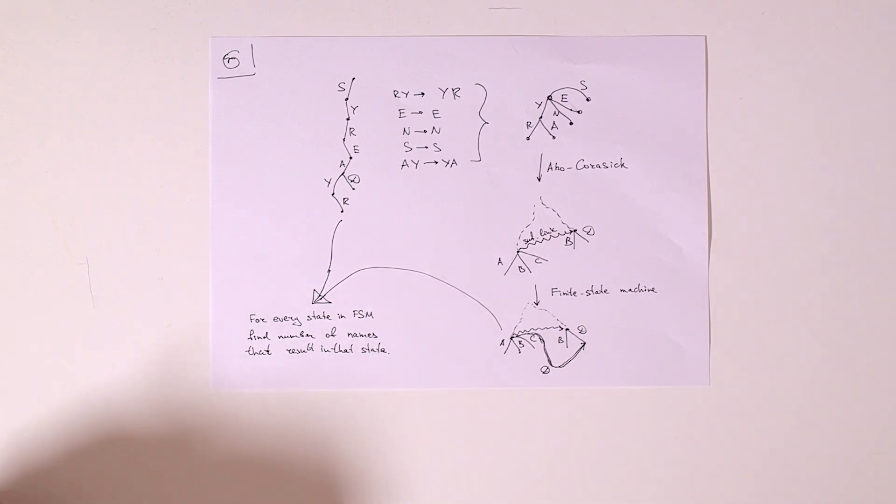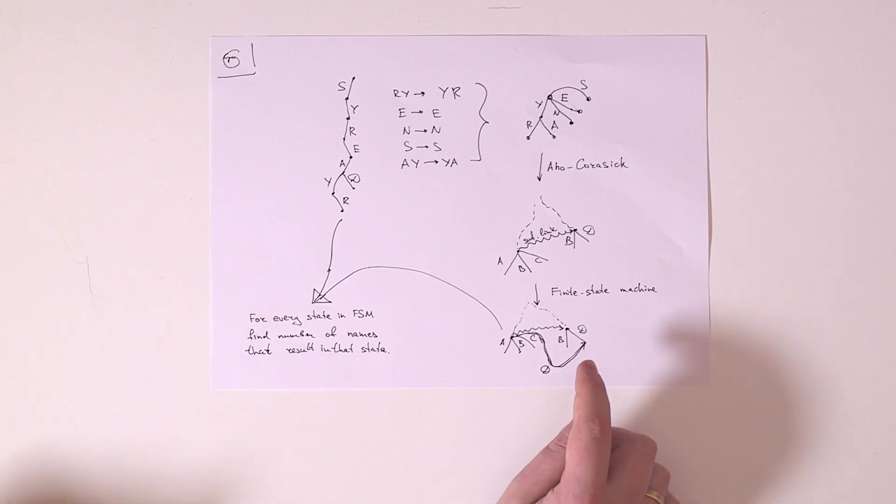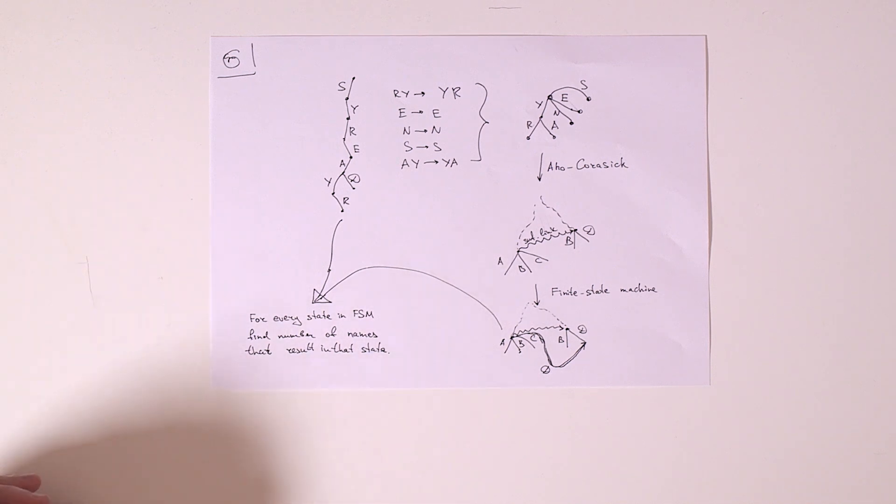then we may create extra edge from the first one using letter D to the one where letter D goes to in the second one. So this will create a state machine that has N vertices and N times 26 which is size of alphabet edges at most.